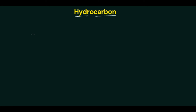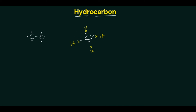Now, thinking about what hydrocarbon means — hydrogen and carbon — let's revisit what we learned in the last lecture. Carbon has four valence electrons, and hydrogen has one. Carbon requires four electrons to complete its octet, meaning carbon has four valence bonds available.